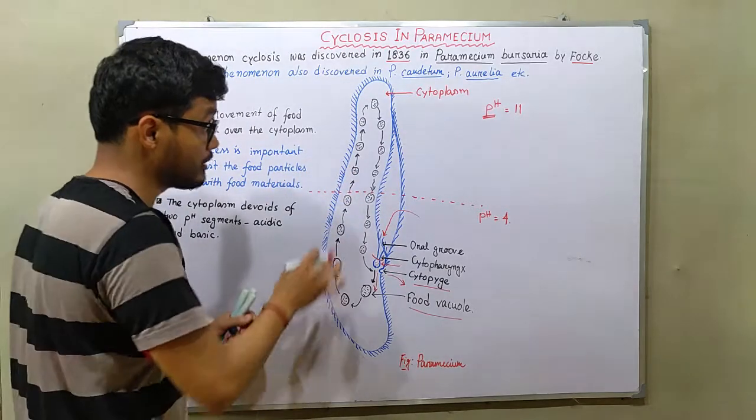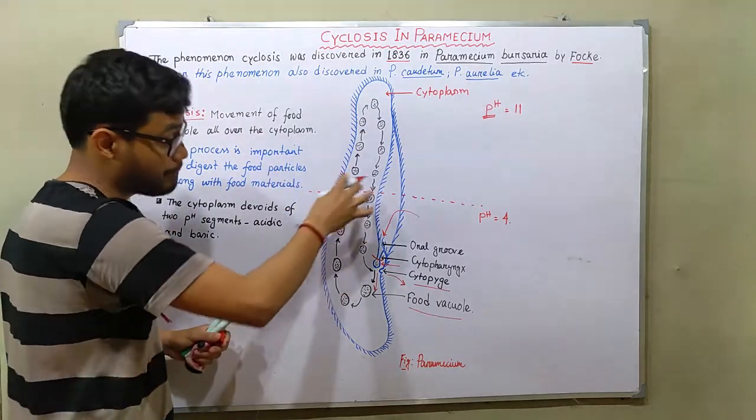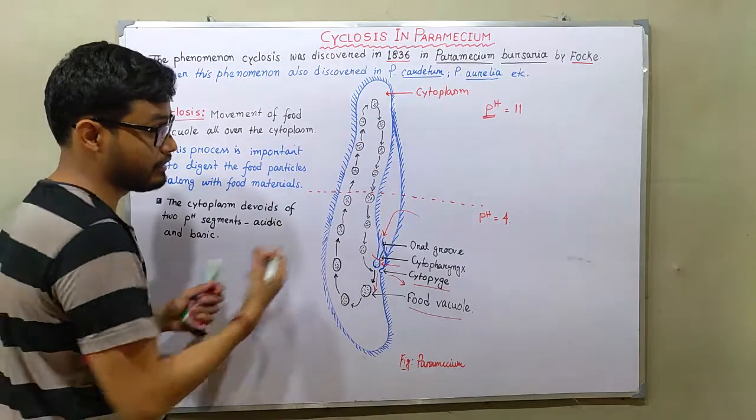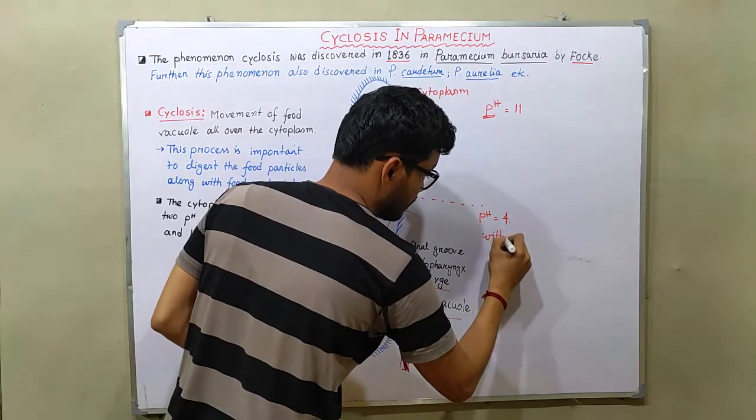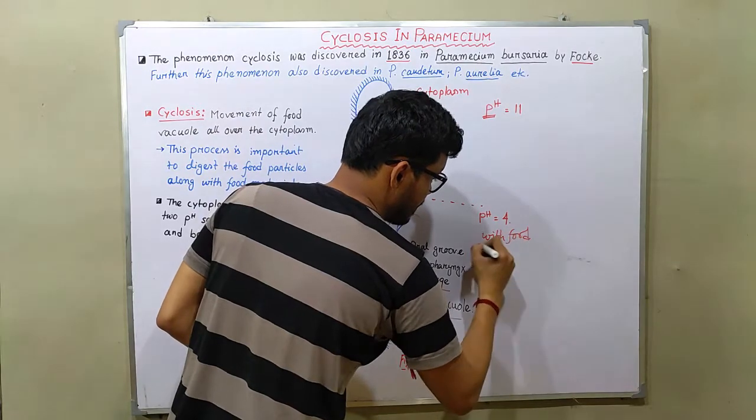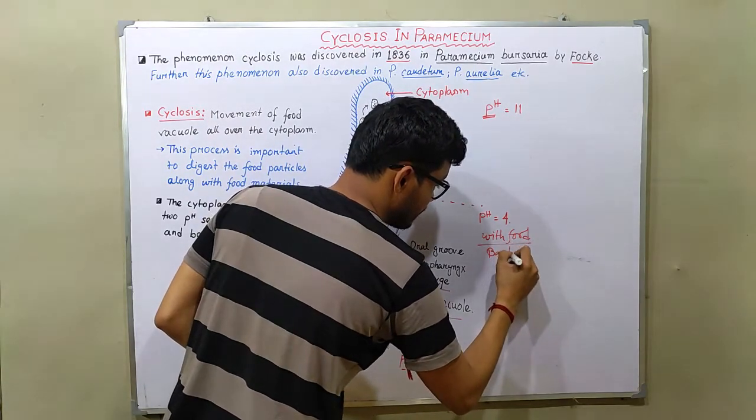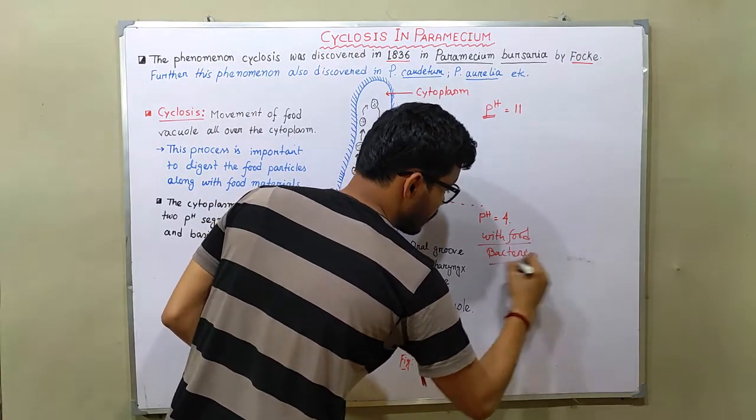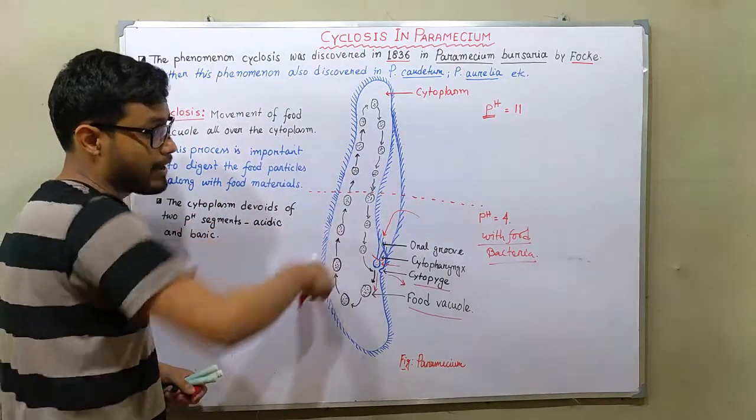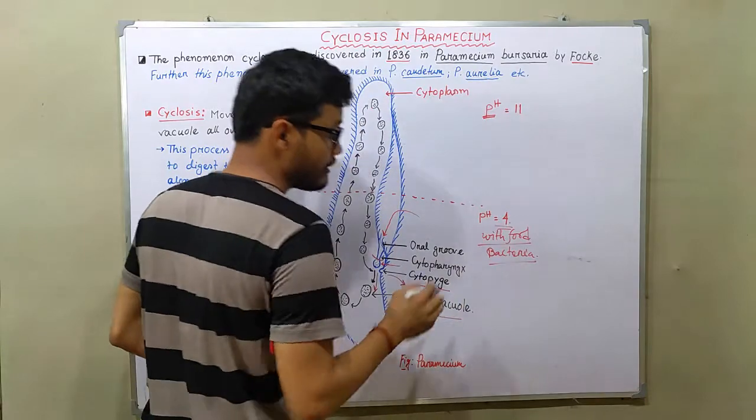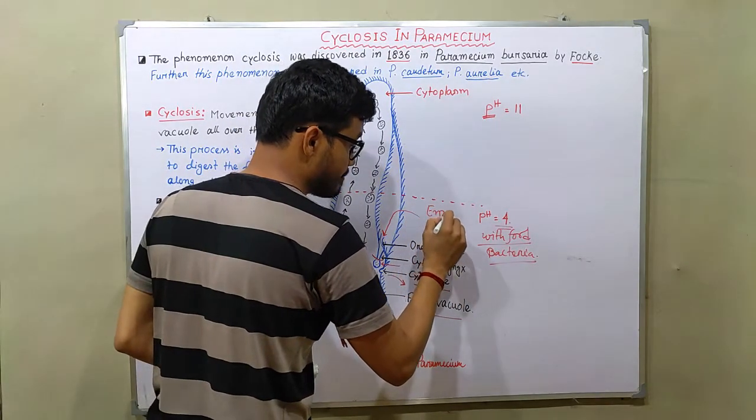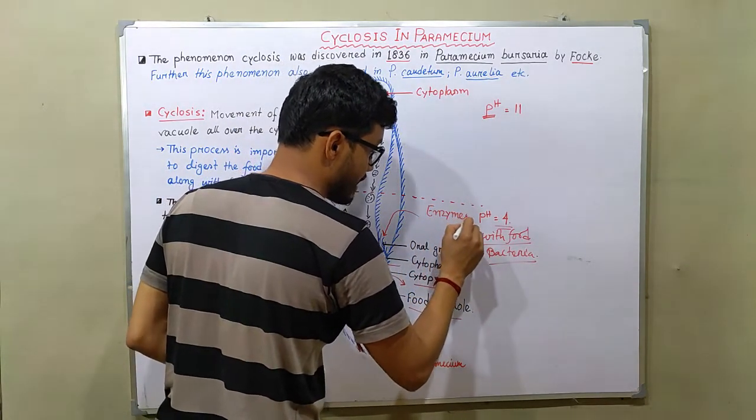Because with food many bacteria also are ingested by this paramecium. And firstly in acidic pH some enzymes work on acidic pH, they are activated here in this region.